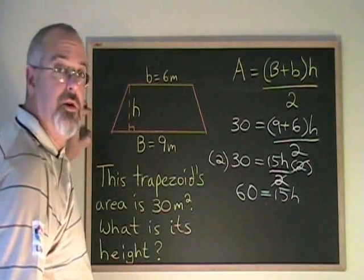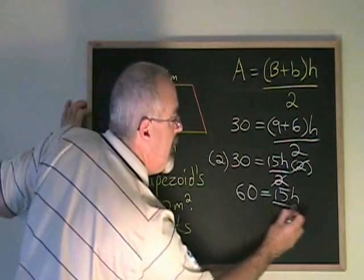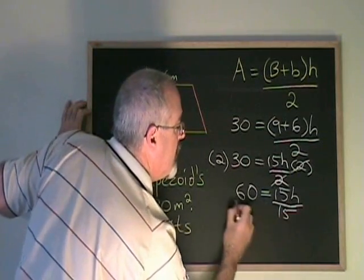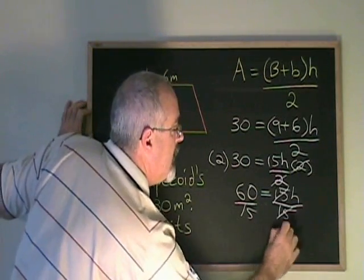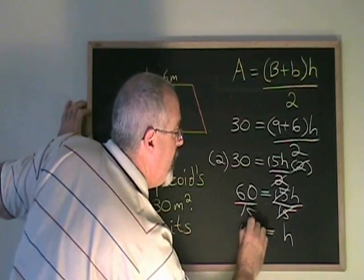We're nearly finished. My h is being multiplied by a 15. So I divide both sides by 15. These cancel. H is equal to 4.